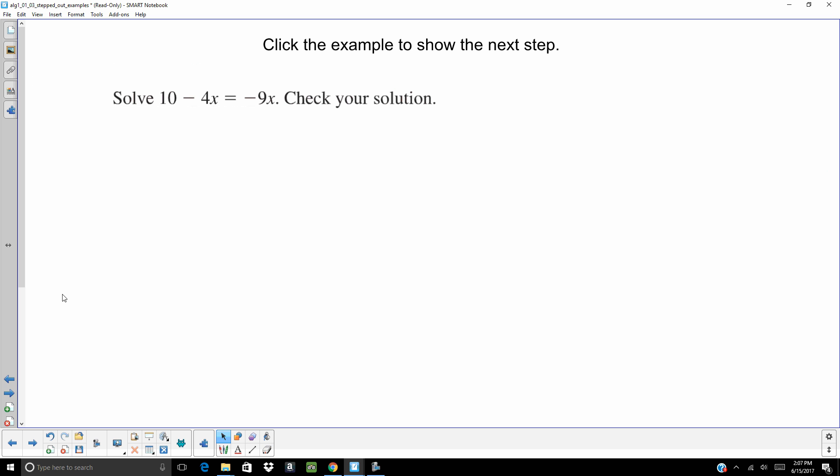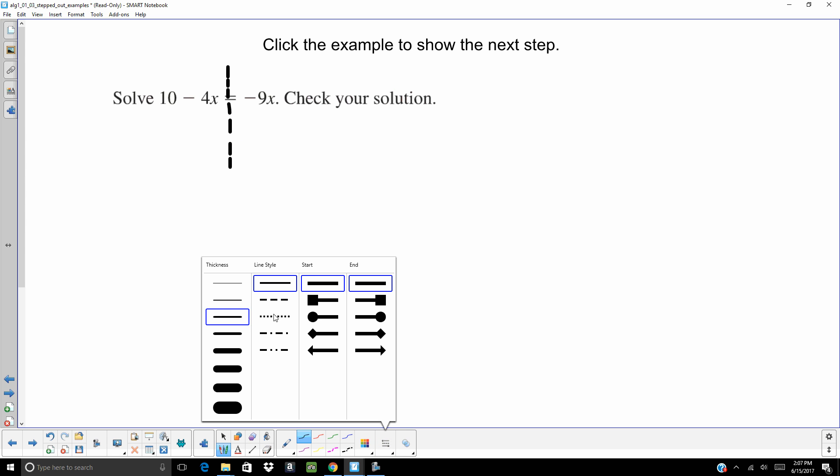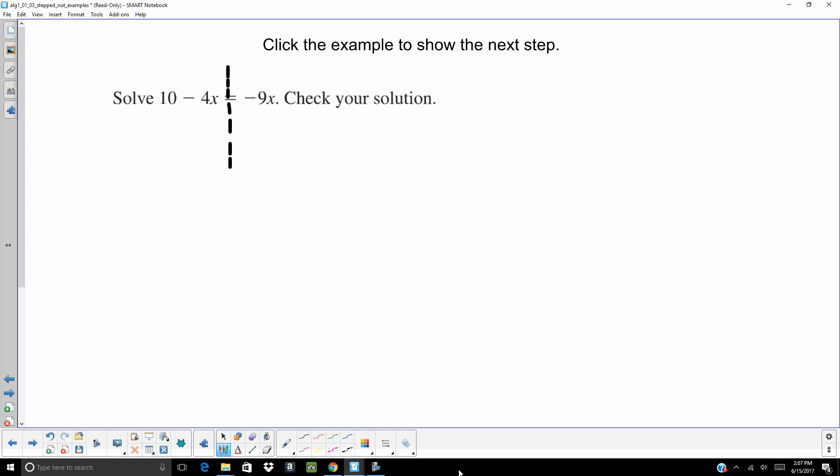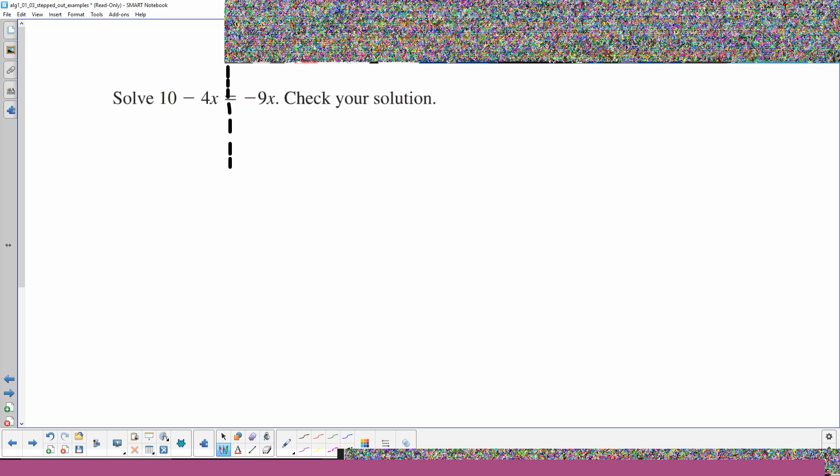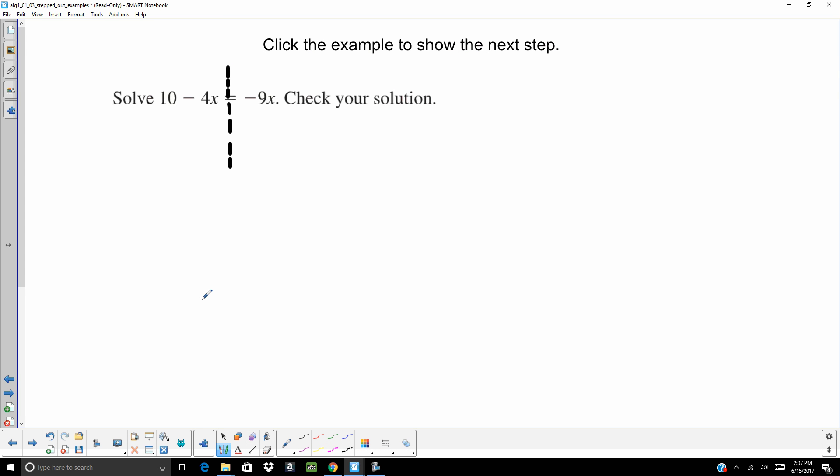So we've got our example. And again, if you need to, draw that line to show that you have two sides of that equal sign. You've got that left-hand side and the right-hand side. Remember, whatever you do to one side, you have to do to the other side. So there's nothing to simplify on the left-hand side, nothing to simplify on the right-hand side. So we need to get those variables to one side of that equal sign.